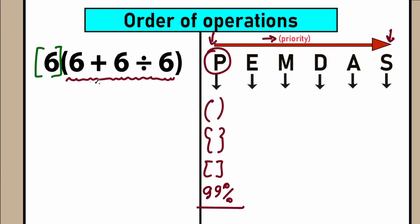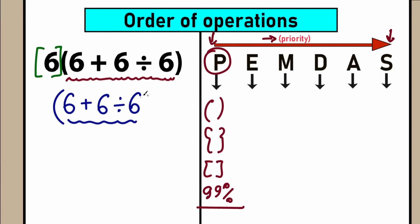Let's rewrite the expression: we have 6 plus 6 divided by 6. When we evaluate this expression inside the parentheses, we can get the correct answer and then multiply by 6. After finding parentheses, scan for exponents — letter E stands for exponents, like 2 to the power of 5. We need to evaluate exponents next, but in our case we don't have any, so we can skip that step.